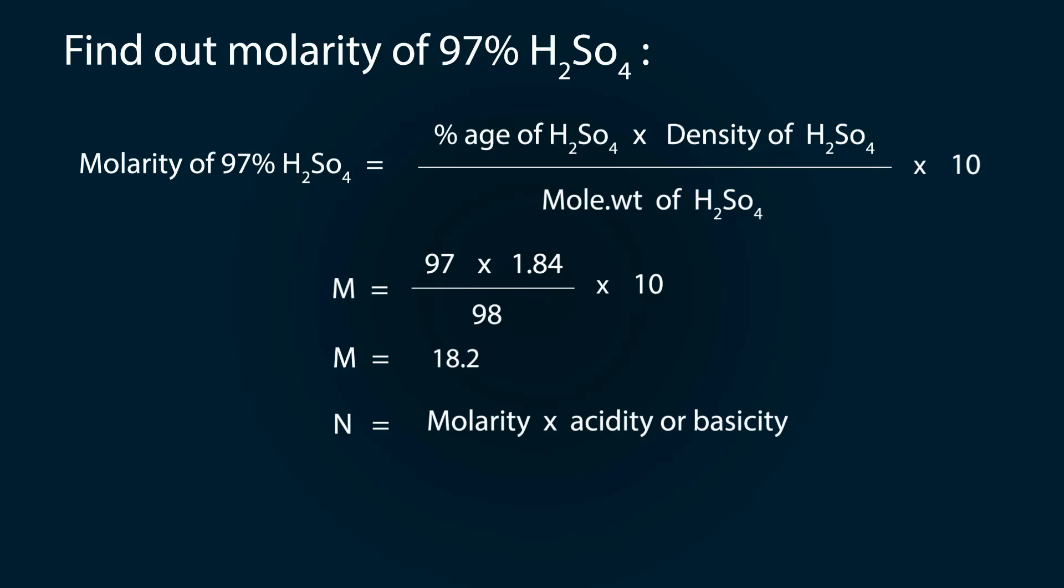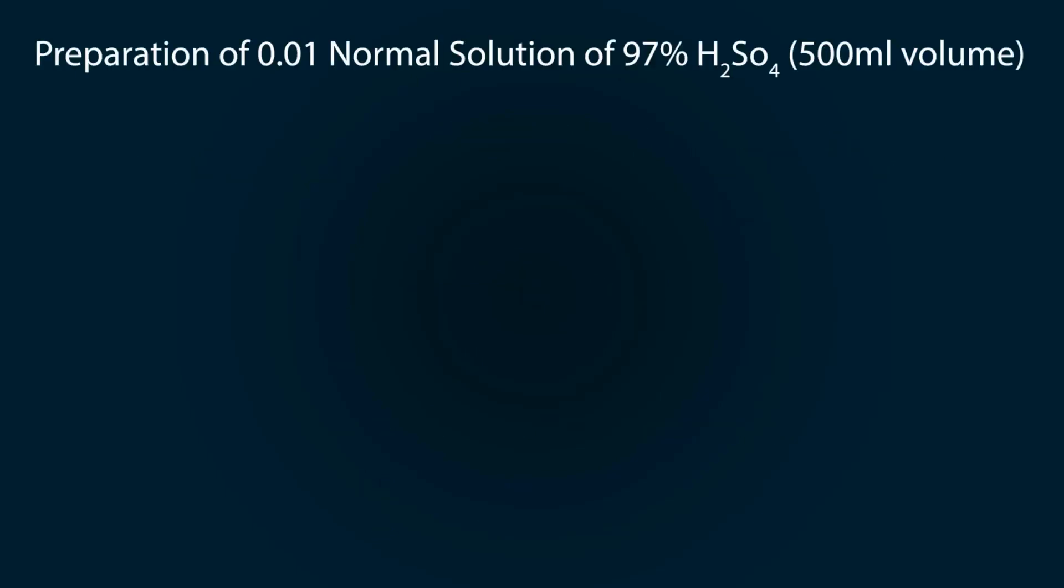Now convert it into normality, so molarity multiplied by acidity basicity equals normality. 18.2 multiplied by 2, which came from H2 hydrogens, so the normality becomes 36.4. Now let's start our preparation of 97% H2SO4.